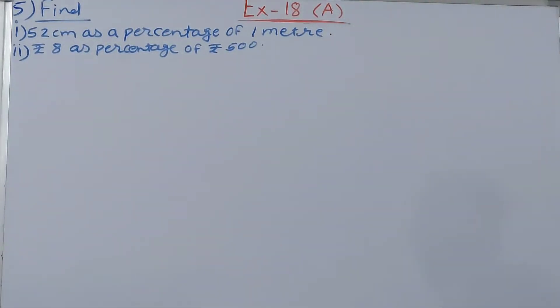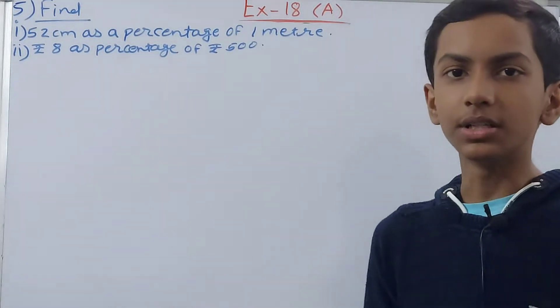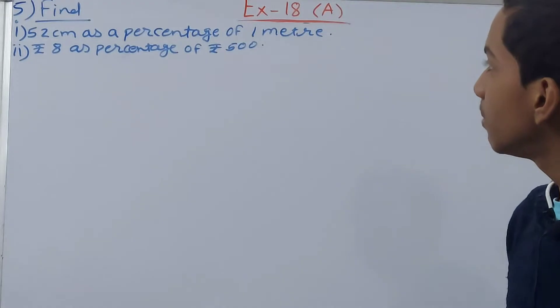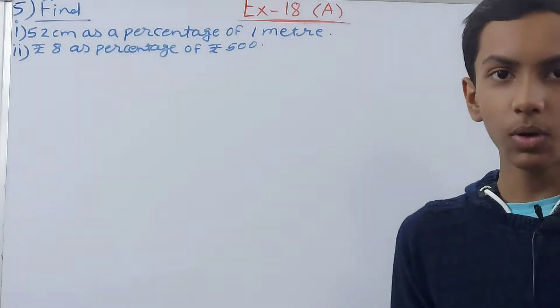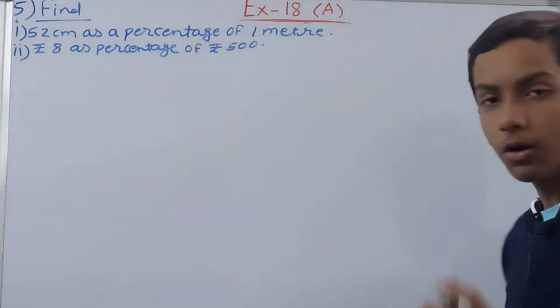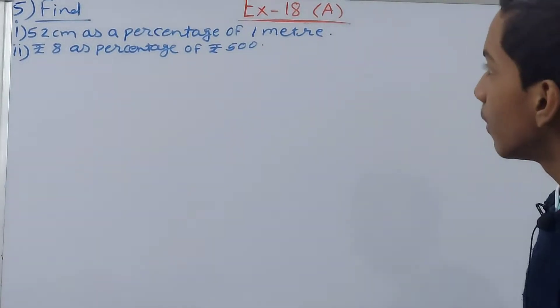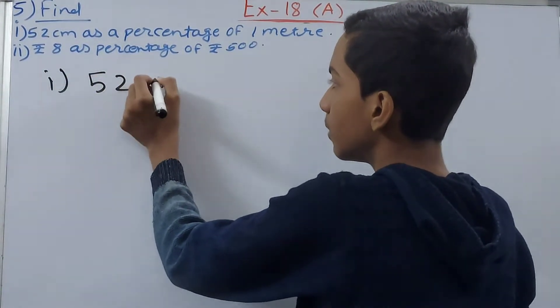So you see here that 52 centimeters as a percentage of 1 meter can be written as 52 upon 1, or 100. Why 100? Sorry, not 1, 100. So first part, what have we got here? 52 centimeters of 1 meter.